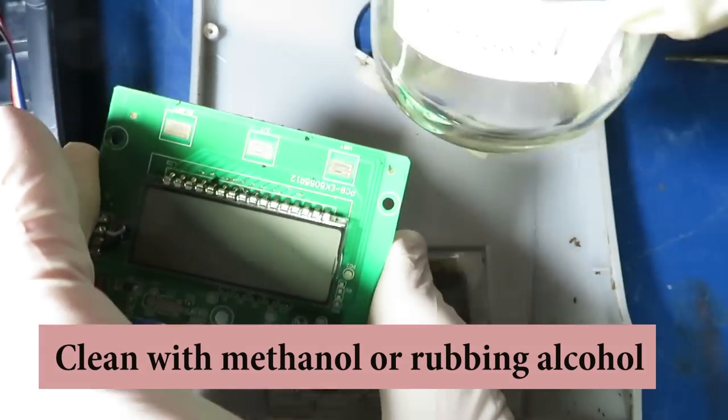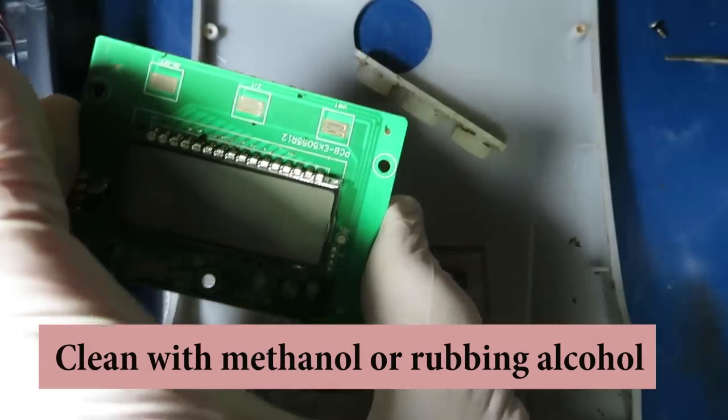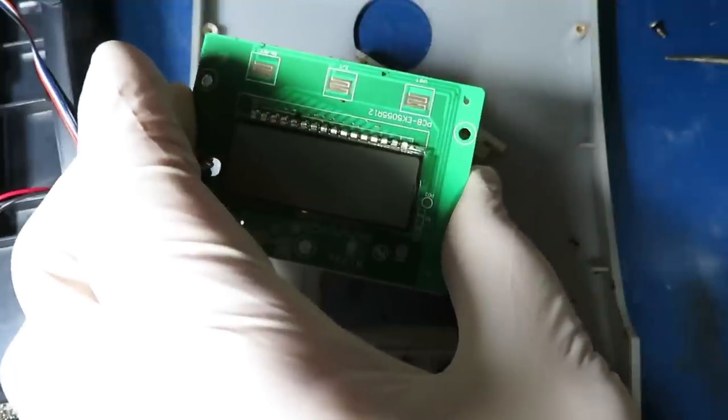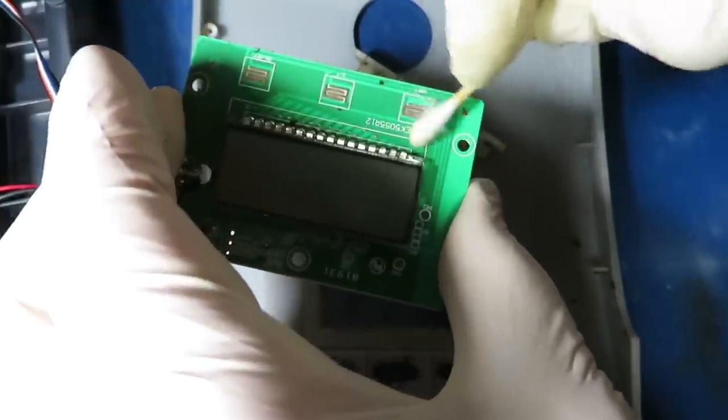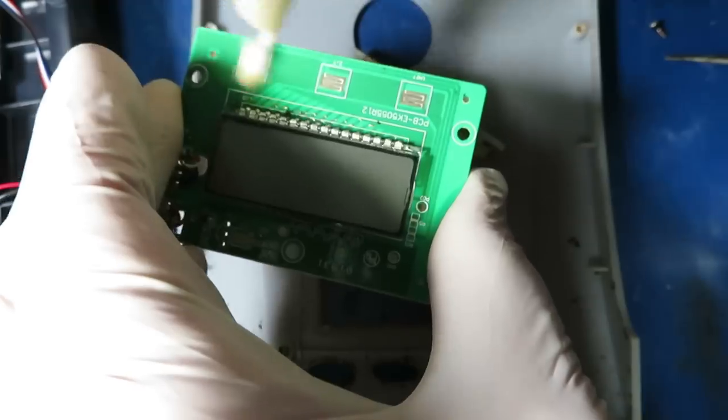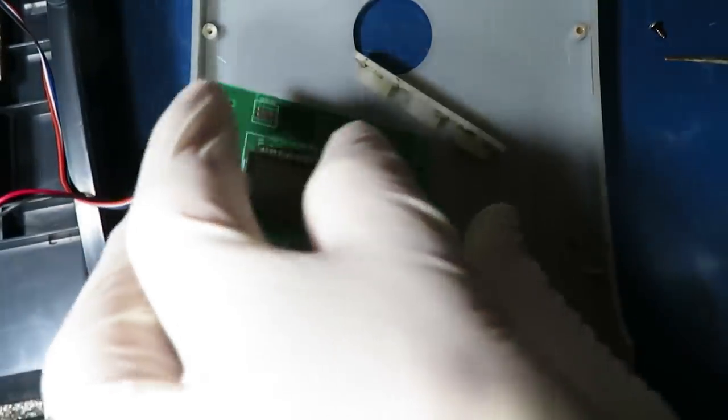So I'm going over this now. I happen to have some methanol here. I can use a solvent, maybe like rubbing alcohol. And these buttons are all sticky. Clean this up here.